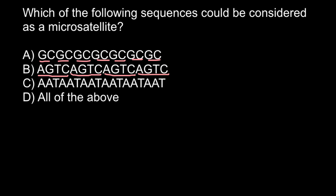Looking at variant C, we have a repeat that consists of three bases — A, A, T — followed by A, T, A, T, A, T, C — repeated many times. So our answer would be answer D.